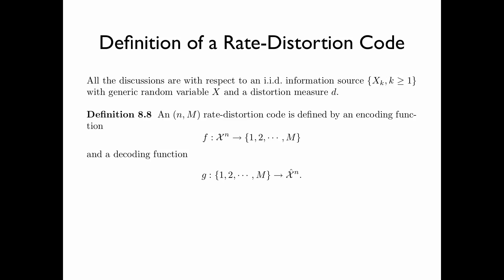An NM rate-distortion code, where n is the block length, is defined by an encoding function f from the source alphabet x to the power n to an index set {1, 2, ..., M}, and a decoding function g from the index set {1, 2, ..., M} to the reproduction alphabet x-hat to the power n.